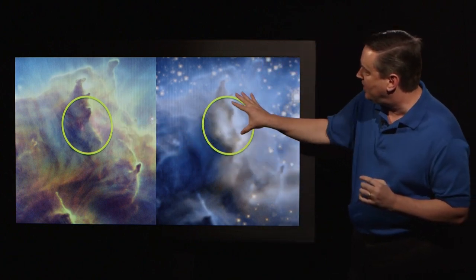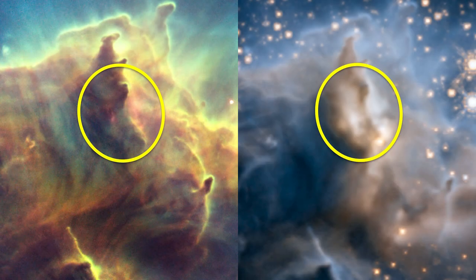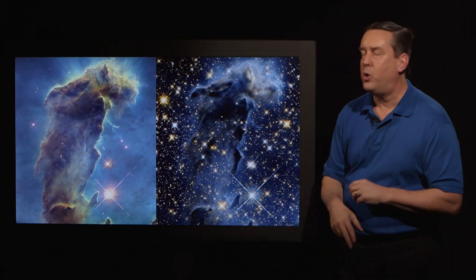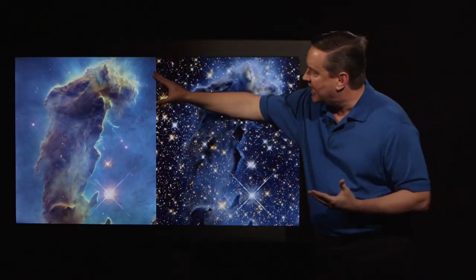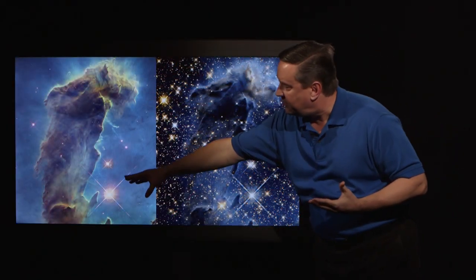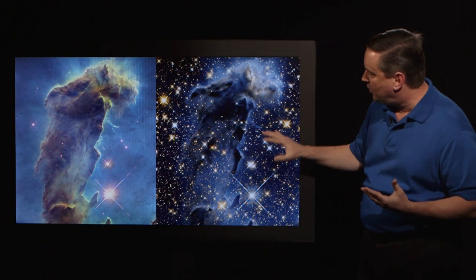But here we can see the big white region that, again, indicates stars in formation inside the pillar. If we pull back to take a look at the top half of the large pillar, we get to see just how ghostly it really is. In visible light, it looks like a relatively solid pillar, but in infrared light, you can see that the middle section is actually low-density gas.